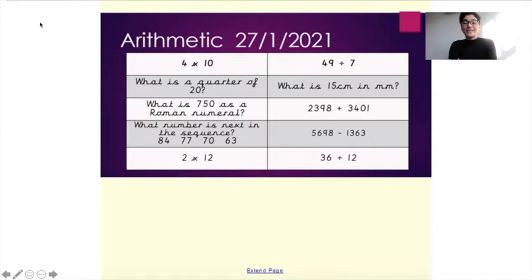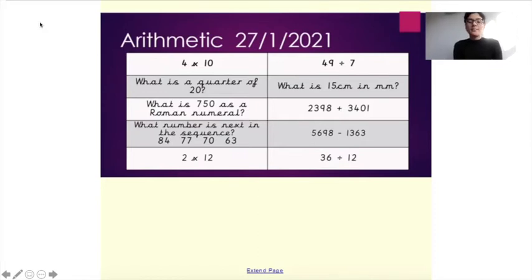4 times 10. What is a quarter of 20? What is 750 as a Roman numeral? What number is next in the sequence? 84, 77, 70, 63.